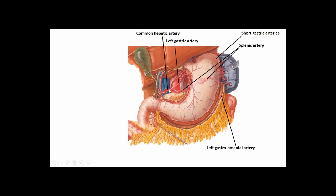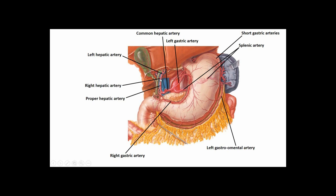The third typical branch off the celiac trunk is the common hepatic artery, traveling to the right side of the body. It splits into the proper hepatic artery going to the liver itself, and off the proper hepatic we typically have the right gastric artery going along the lesser curvature of the stomach, anastomosing with the left gastric artery. Further superiorly, the proper hepatic branches into left and right hepatic arteries. Off the right hepatic artery we typically have the cystic artery.